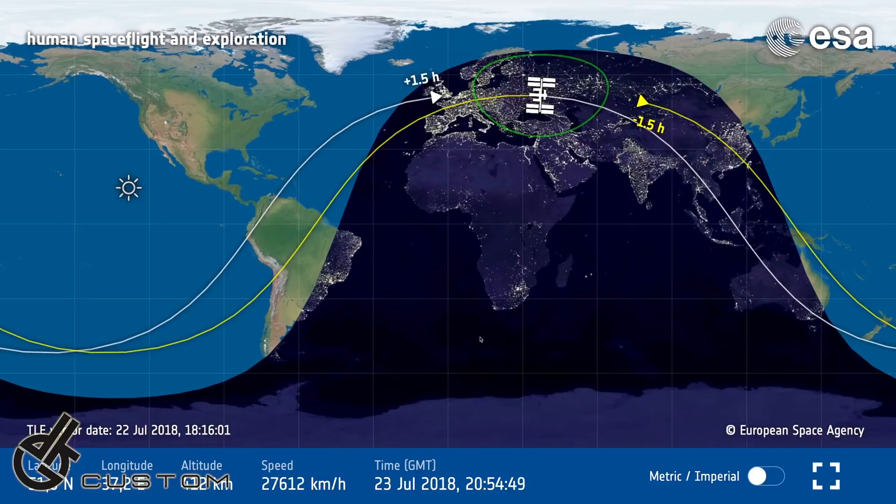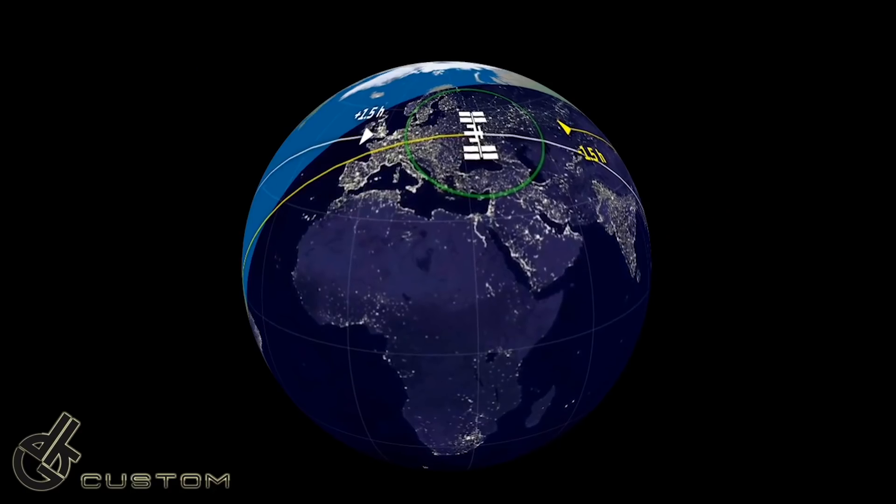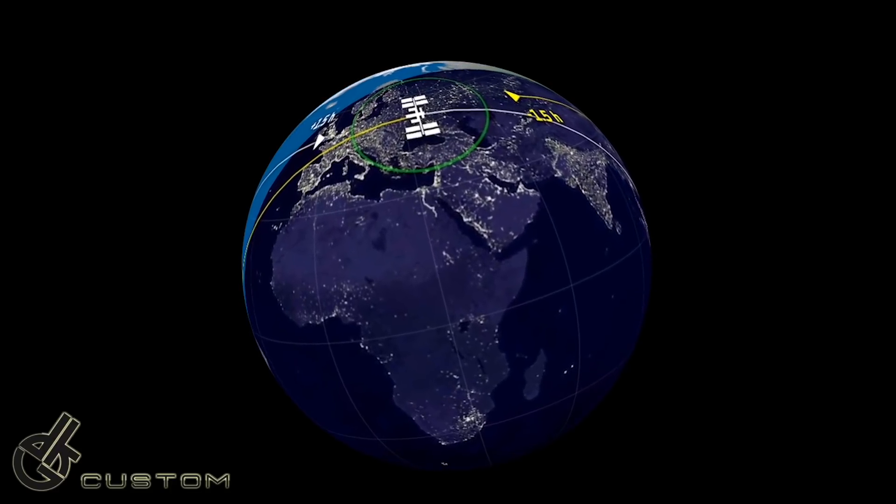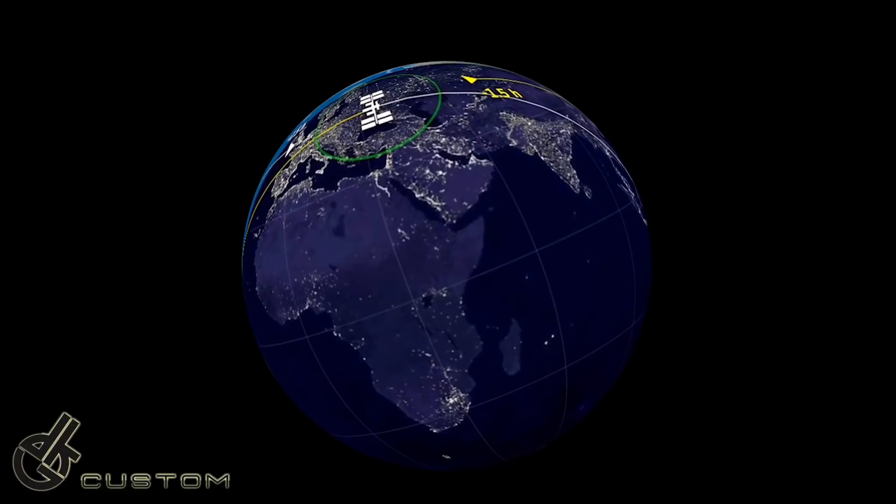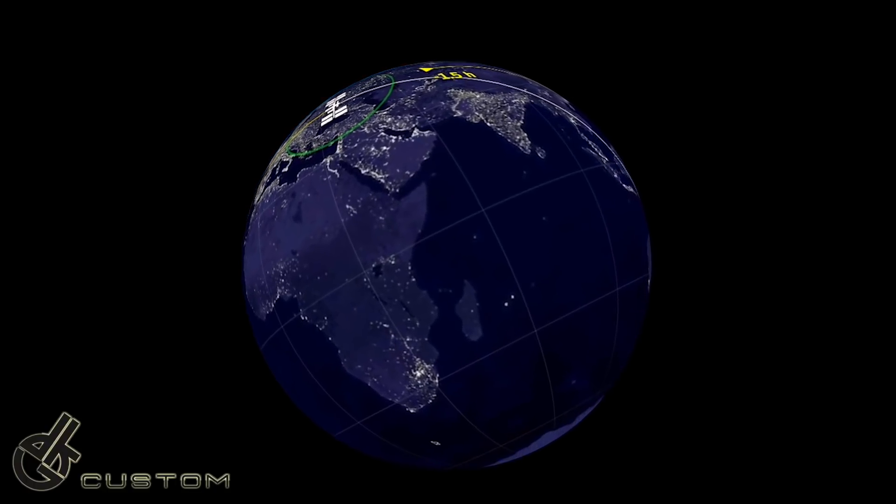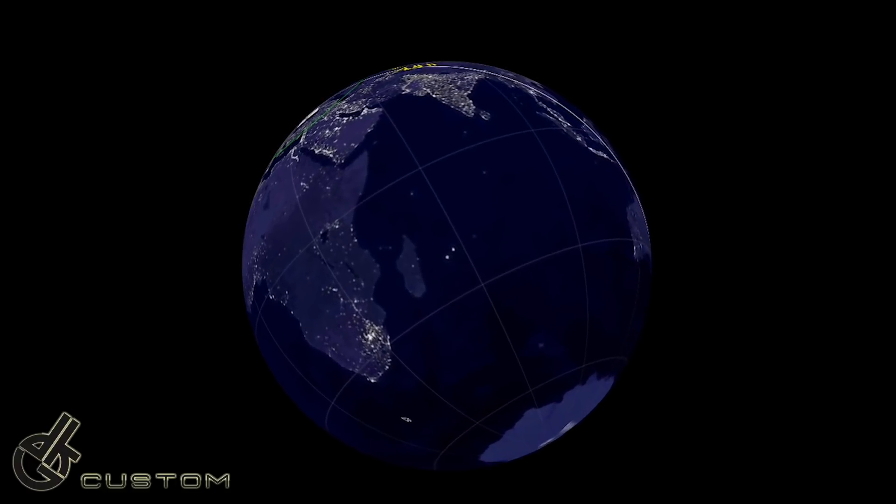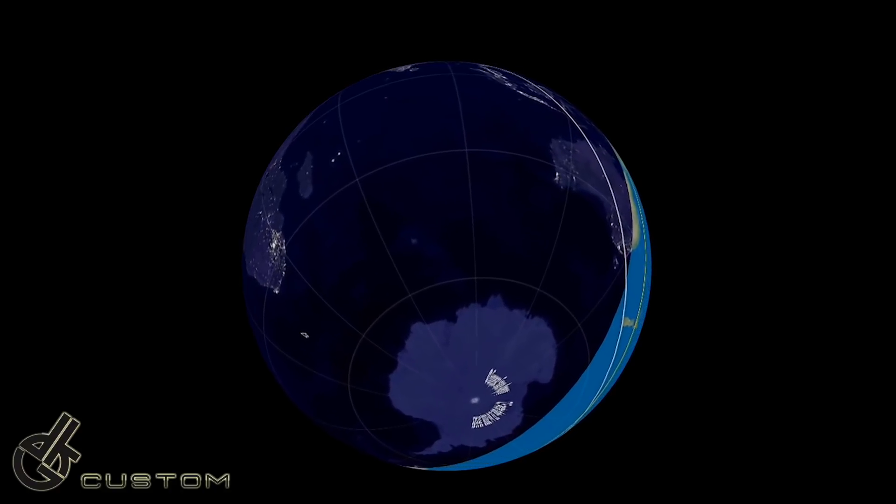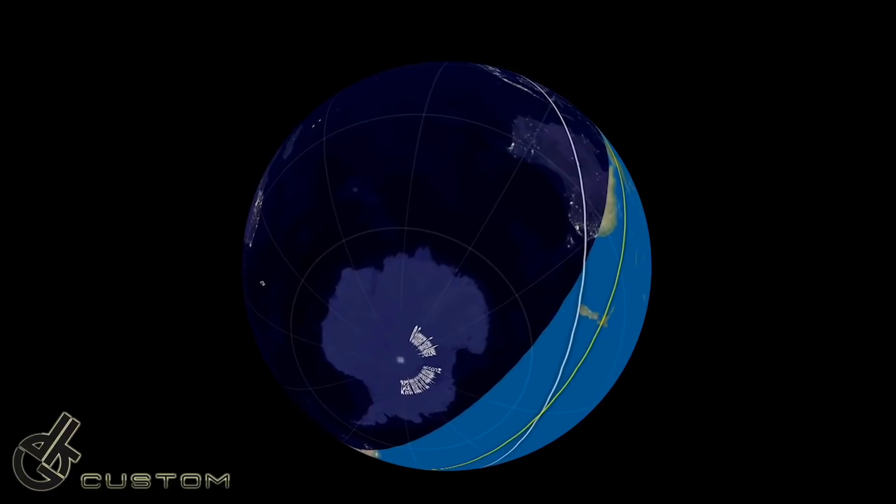Now why does the ISS path do a little dance north and south of the equator? When we map the equirectangular map onto a sphere, it simply shows the orbit as a straightforward circular path around the earth. The 1.5 and minus 1.5 hour paths, it will become clear in a bit.